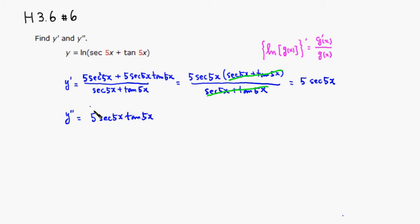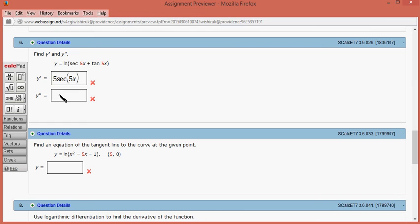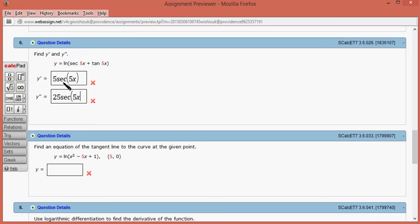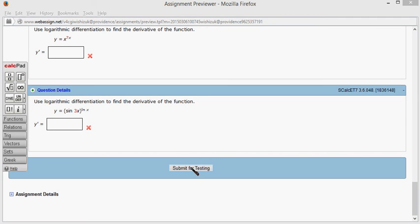So 5 times 5 is 25. Let's type it in: 25 secant 5x tangent 5x. Now let's submit for testing.